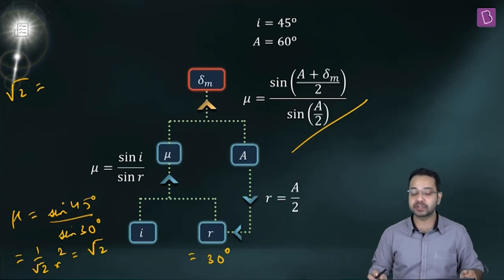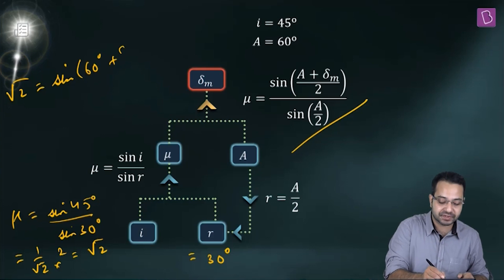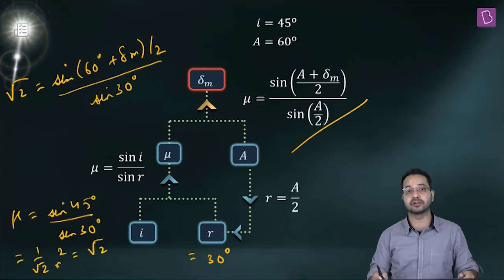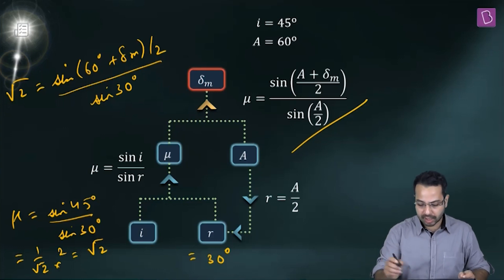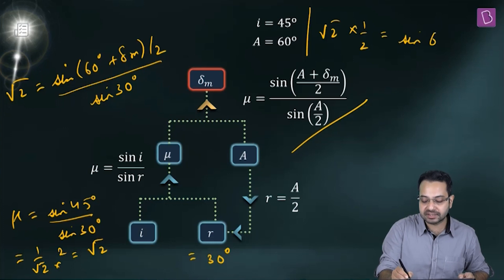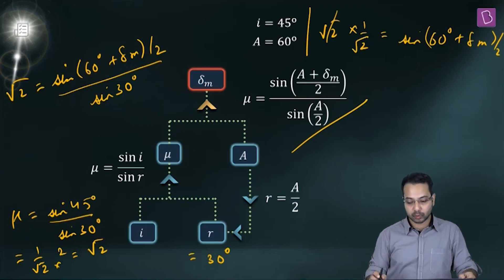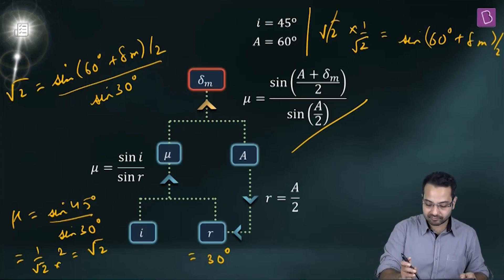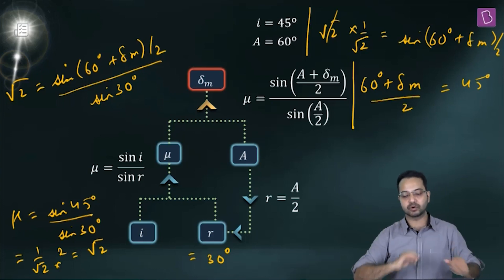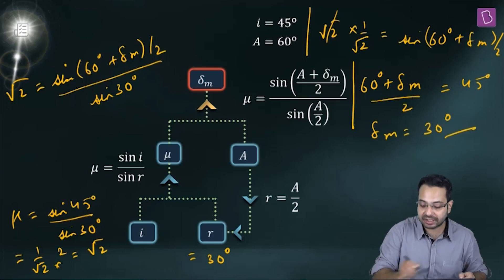Now substituting: μ = √2 = sin((60° + δ_m)/2) / sin(A/2). sin(A/2) = sin(30°) = 1/2. So √2 × (1/2) = 1/√2 = sin((60° + δ_m)/2). Therefore (60° + δ_m)/2 = 45°, which gives δ_m = 90° − 60° = 30°.